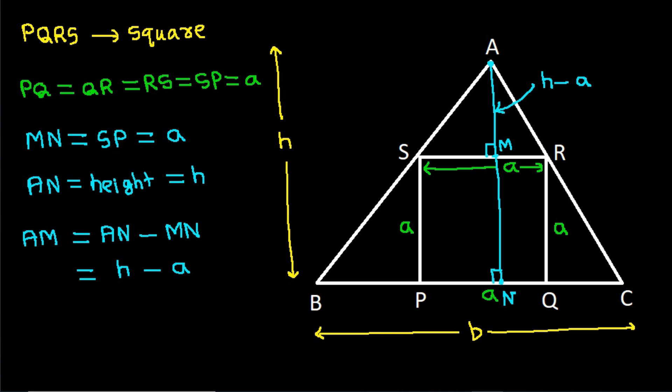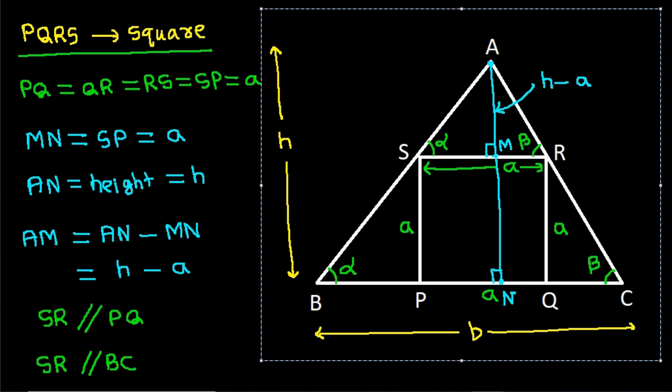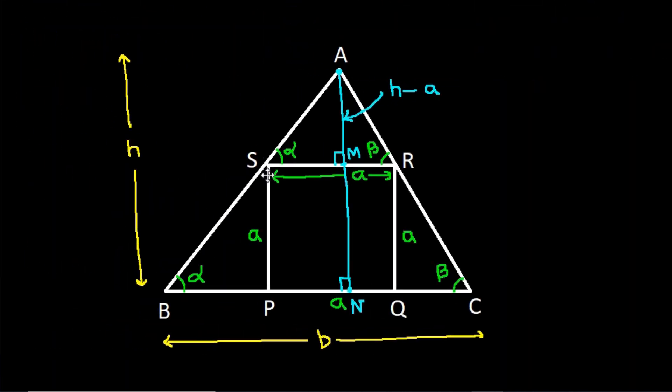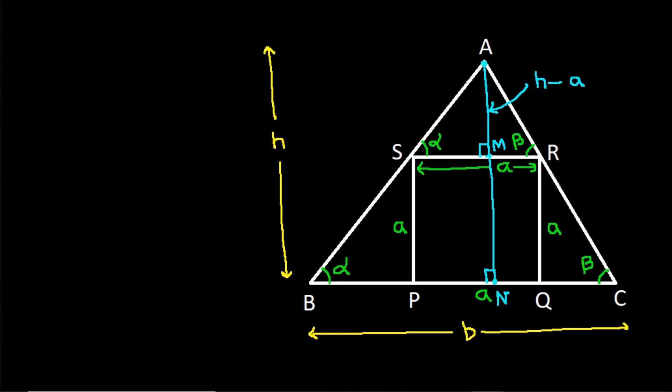And now, PQRS is a square, so SR will be parallel to PQ. That means SR will be parallel to BC. That means these two angles will be equal and these two angles will be equal.